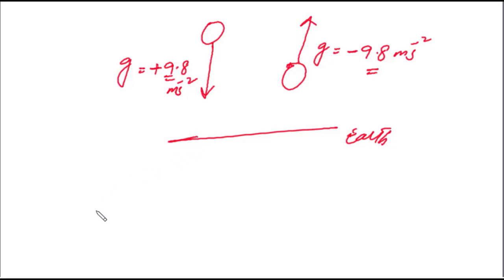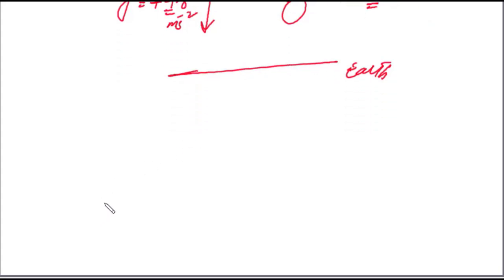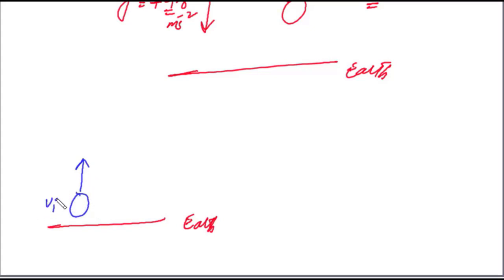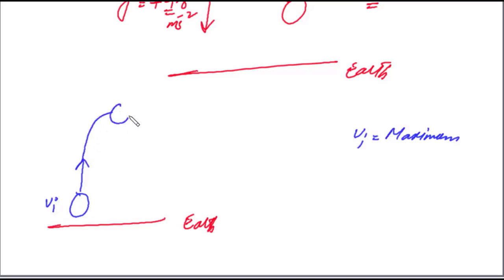ایک ball کی motion consider کرتے ہیں۔ فرض کریں یہ earth کا level ہے اور ہمارے پاس ایک ball ہے جسے ہم upward direction میں پھینکنا چاہتے ہیں۔ جب ہم اس ball کو چھوڑیں گے تو اس کی initial velocity vi maximum ہوگی۔ جب یہ maximum height پر پہنچے گی تو اس کی final velocity zero ہو جائے گی۔